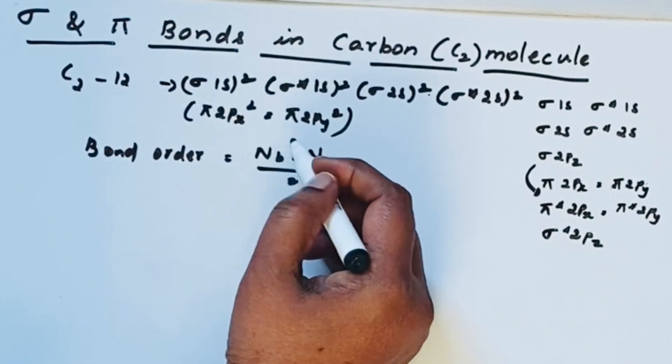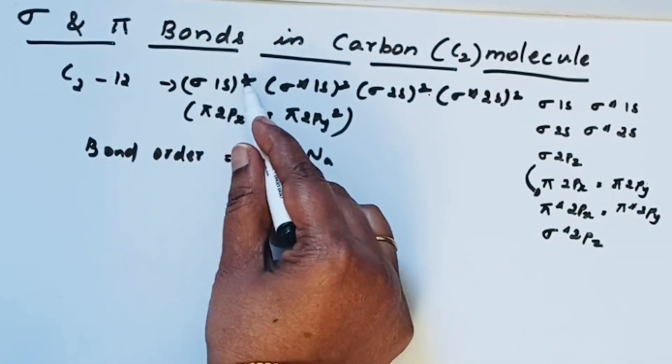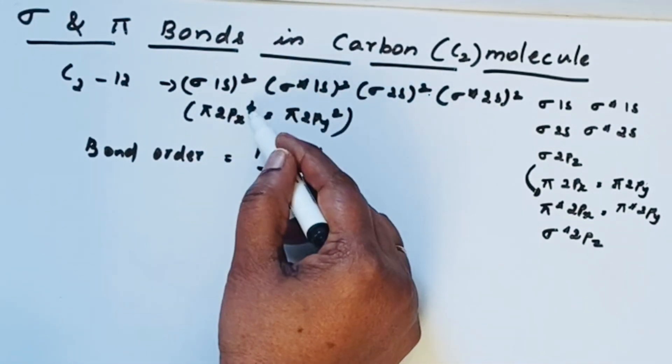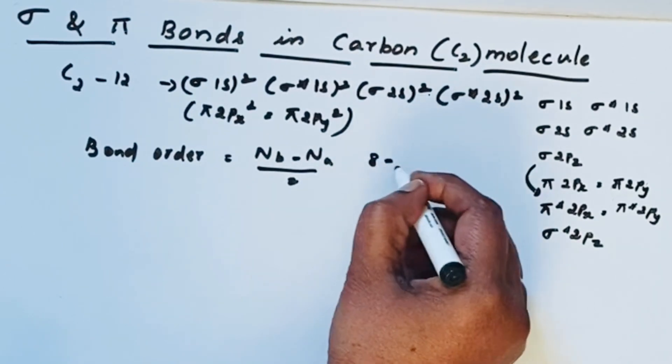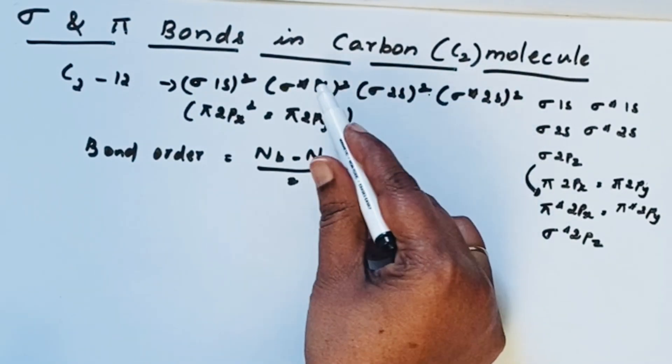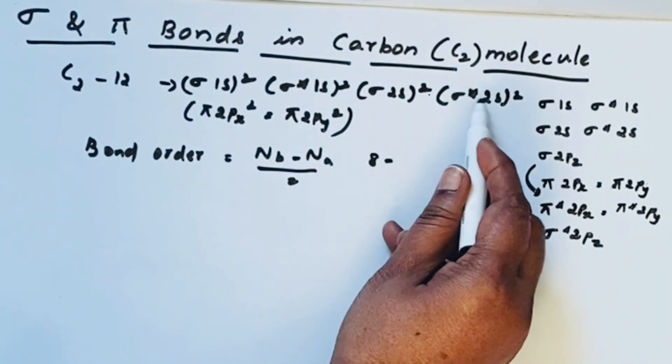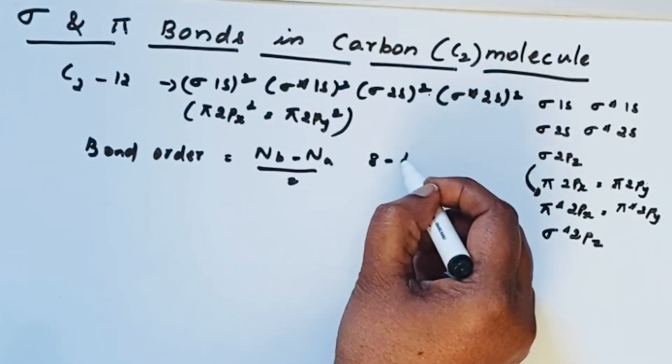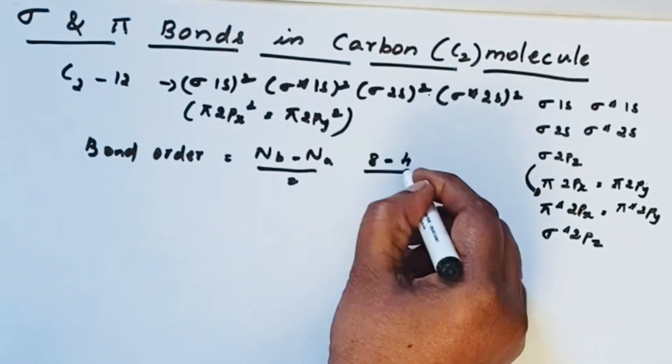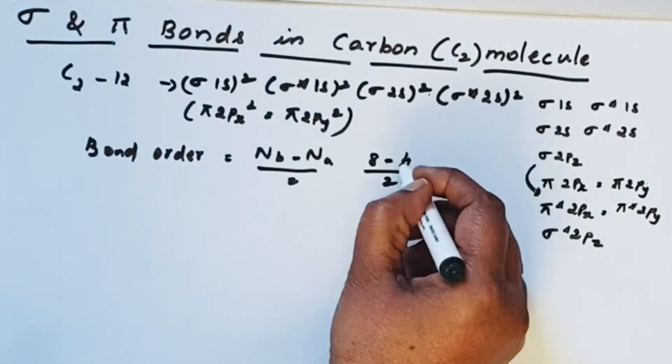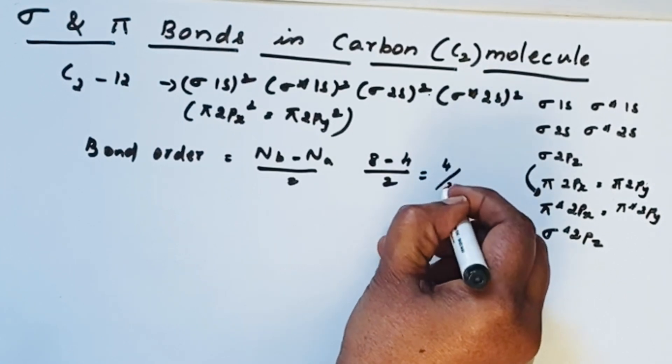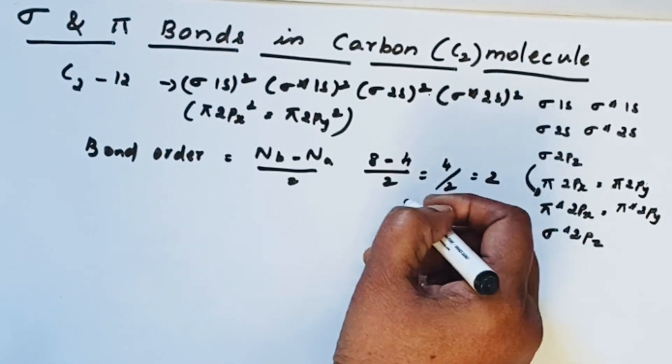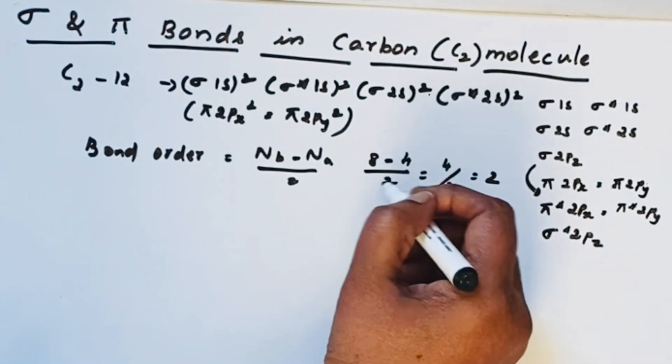So bonding electrons here: sigma 1s2, 2, then here 4, 6, 8. So we have a total of 8 bonding electrons. And sigma star and sigma star 2s2, so 2 plus 2 equals 4 antibonding electrons. So 8 minus 4 by 2 is equal to 4 by 2, which gives 2. It means the bond order of carbon molecule is 2.